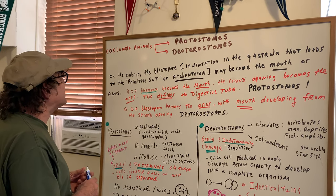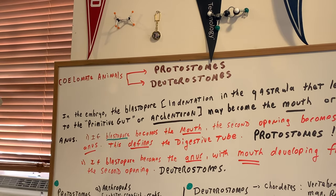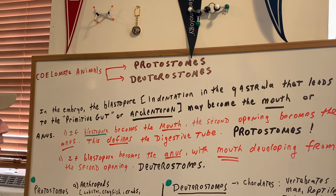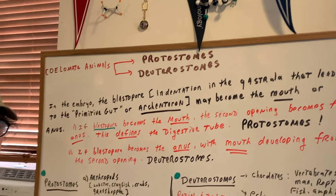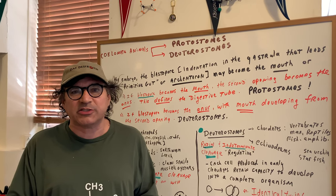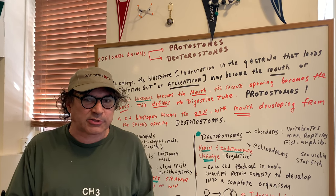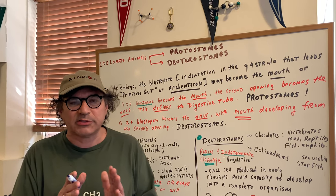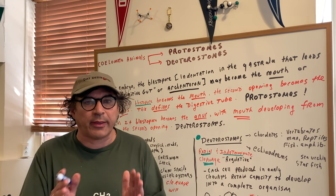Coelomate animals. Coelomate simply means it has a body cavity. We can divide these into protostomes and deuterostomes. Now, in the embryo, the blastopore — which is an indentation in the gastrula that leads to the primitive gut or the archenteron — may become either the mouth or the anus. I recommend having a picture in front of you; the Neil Campbell textbook has a nice picture of a blastopore. This blastopore is an opening, and it can either become the mouth or the anus, and that's going to define the digestive tube.